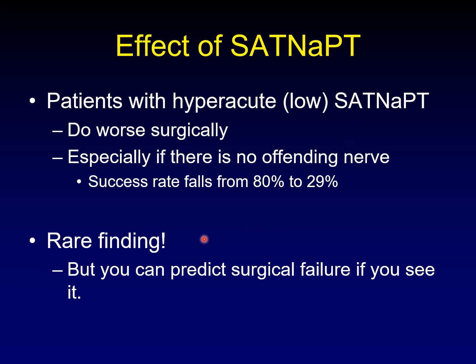This is admittedly a rare finding — only about 17% of patients with classical trigeminal neuralgia will have it. But if you can see it, and if you can identify patients with a hyperacute sagittal angle in combination with a lack of offending artery, you may be able to predict patients who will not benefit from this surgery and may need a different type of surgery.